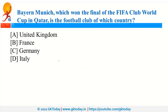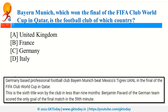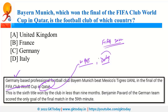Bayern Munich, a football club from Germany, won the final of the FIFA Club World Cup held in Qatar. Qatar is a country in West Asia; its capital Doha is the host of the FIFA 2022 World Cup and was also in news for the US-Taliban peace deal. Taliban is a militant group from Afghanistan.